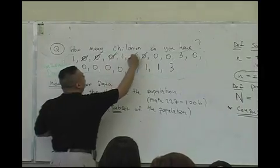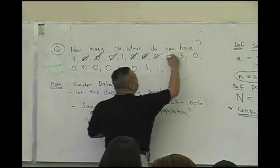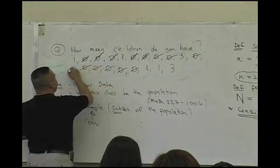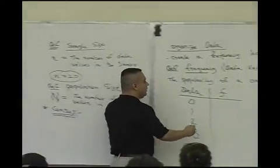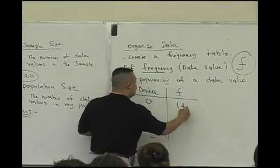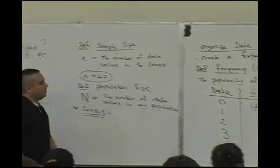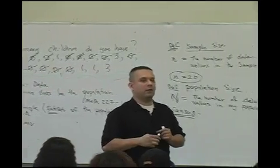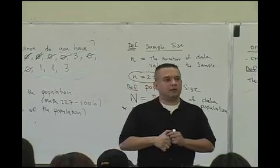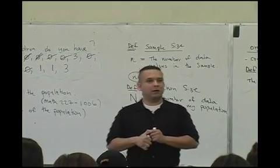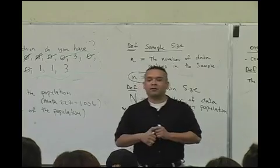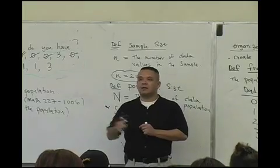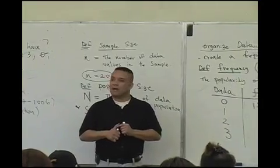One, two, three, four, five, six, seven, eight, nine, ten, eleven, twelve, thirteen, fourteen. So, the data value zero has a frequency of fourteen. That's how many votes, that's how popular zero is in that list. You guys okay with that? That's the frequency. Is that easy or is that hard? Easy, good.